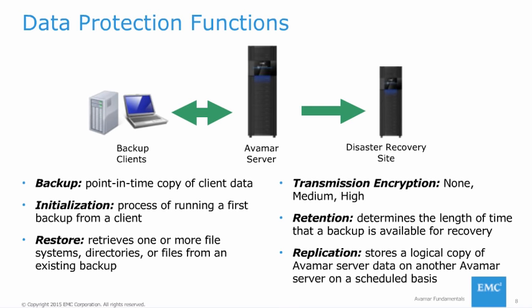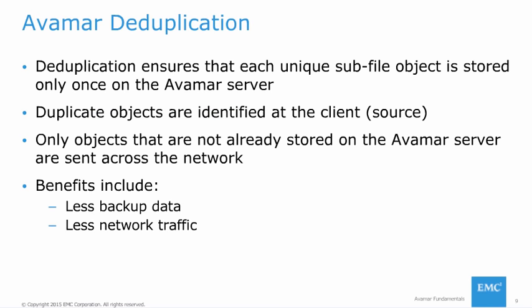In addition to in-flight encryption, an Avamar server can be configured to encrypt all backup data on disk. Retention determines the length of time that a backup is available for restores. Avamar allows you to specify how long a backup is retained, and unused chunks from backups that have expired are deleted from the system. Replication is the process of storing a logical copy of Avamar server data on another Avamar server to support future disaster recovery. Deduplication ensures that each unique object is stored only once on the Avamar storage system. Redundant backup data is eliminated at the client, drastically reducing data traveling across the network. As long as a data object is stored on the server, it is never resent, dramatically reducing network traffic and enhancing backup storage efficiency.